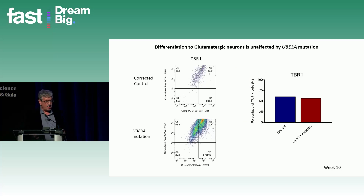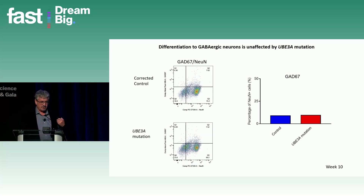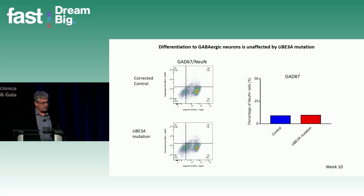Looking at a population of glutamatergic excitatory neurons using a specific marker, there is a large population of these cells in our cultures, and the proportion is not different between corrected control neurons and UBE3A mutation neurons. We also have inhibitory neurons, which are important for neuronal function — that population is also not different. We can generate glial cells endogenously in these cultures, and a marker for astrocytes likewise shows no difference in population between UBE3A mutation and corrected control.